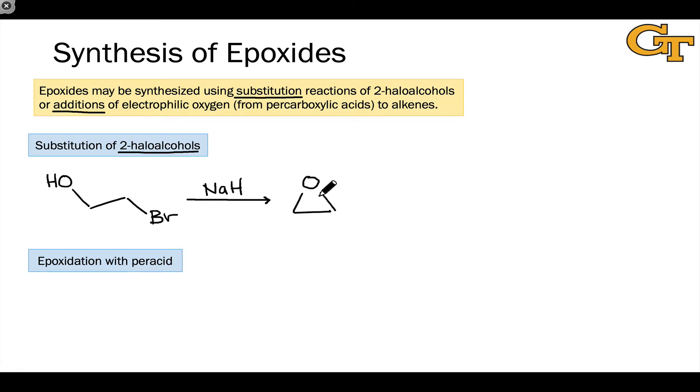Treatment of this 2-haloalcohol with sodium hydride gives rise to this product, which is called ethylene oxide. In a sense, it's the oxide of ethylene, C2H4. Notice that there are four hydrogens linked to the two carbons of the epoxide ring.